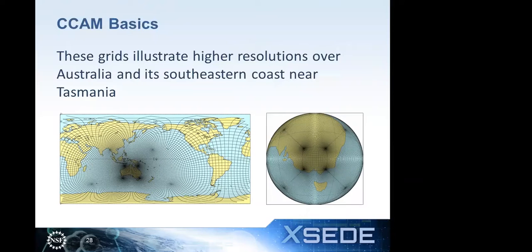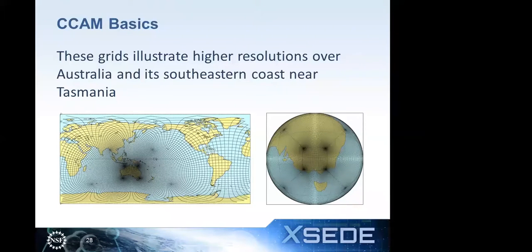CCAM can also use stretching grids. In this image on the left, we see the corners of one face essentially over Australia, where the resolution is very high compared to the rest of the planet. On the right, there's even a minor focus over the southeast coast of Australia. The rest of the planet's surface is at very low resolution by comparison.